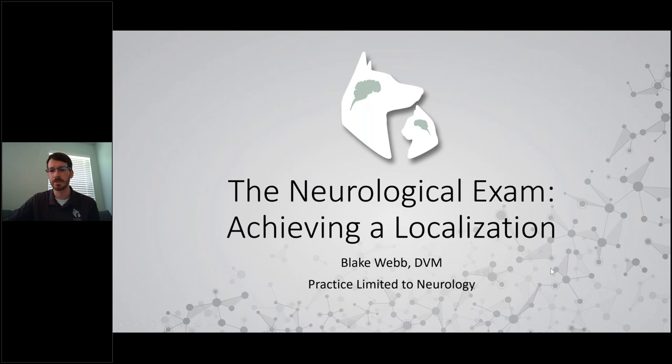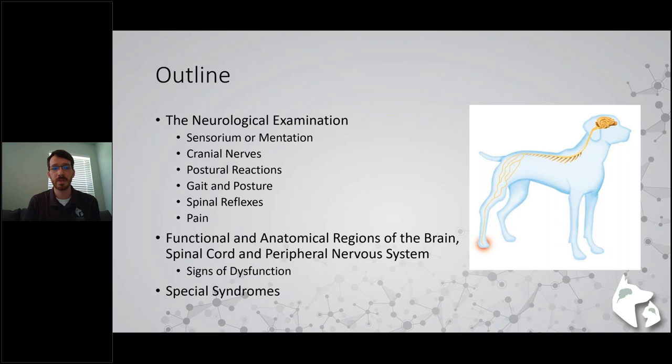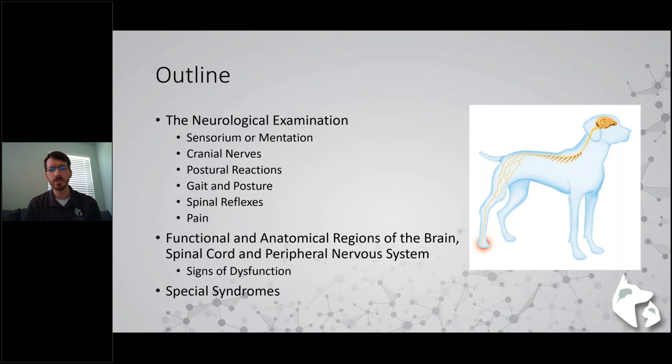The neurological exam is broken down into six sections. When you're evaluating your patient, you want to check sensorium or mentation - what is the mental status of this patient and what is their alertness level? The next step is evaluating cranial nerves. Just like in people, dogs and cats have 12 cranial nerves that come from the brain and innervate sensation and motor function to the face, eyes, larynx, pharynx, and tongue.